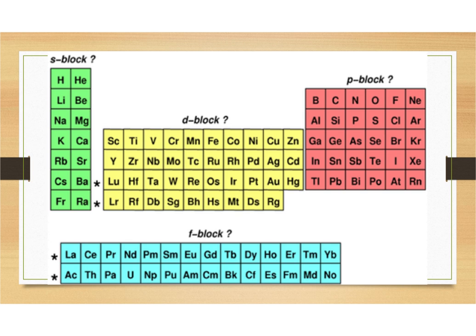After completing metal, nonmetal, and metalloid, we are going to color in for our blocks. Remember, each box is divided into three sections — we colored the top one for metal/nonmetal/metalloid, we'll leave the middle one blank for now, and on the bottom section we're going to color in for our blocks: S block, P block, D block, and F block. You can use the colors already shown or your own colors — just make sure you have a key.